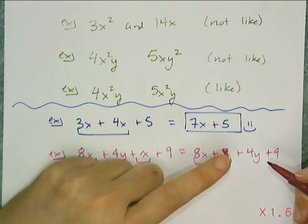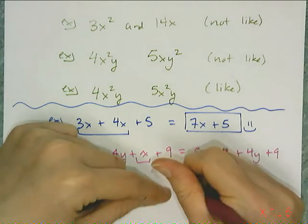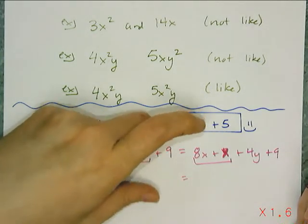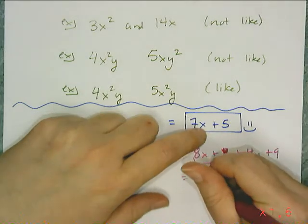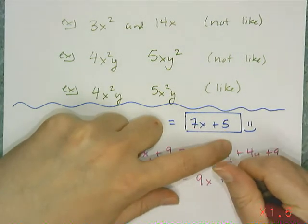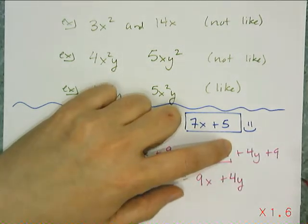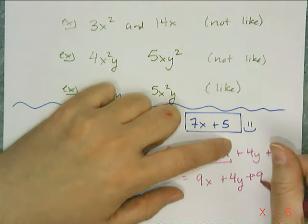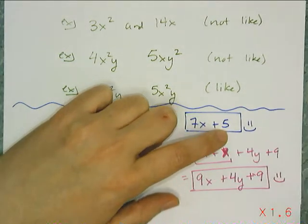So now this x here, the one that I accidentally wrote wrong, does have a coefficient. And remember the coefficient is 1. So if I follow the procedure of adding the coefficients, 8x plus 1x gives me 9x. Now that 4y can't combine with anything. And that 9 can't combine with anything either. And so then this is my simplified answer.